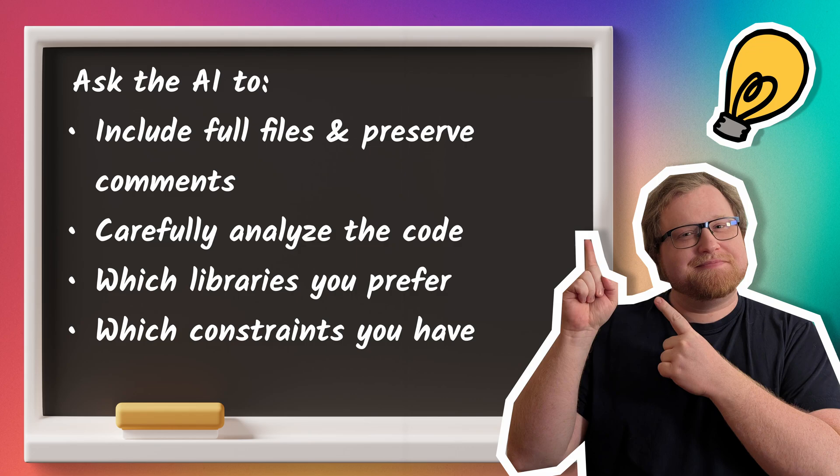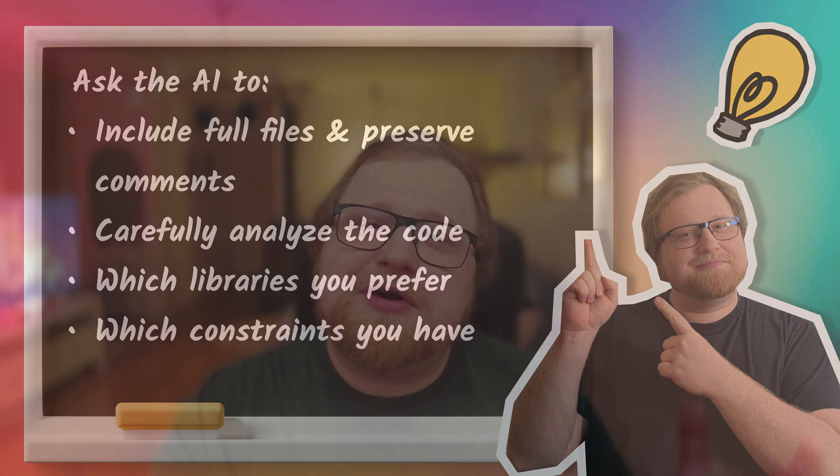I also tell it to preserve comments, because I've noticed that AIs are really good at removing comments from the codebase. Third, I tell it to use the entire project context — basically, to read the project carefully before answering. Fourth, I tell it which libraries I prefer. And lastly, I put in any project-specific needs, like constraints on packages you can't use, performance budgets, or other technical limitations.